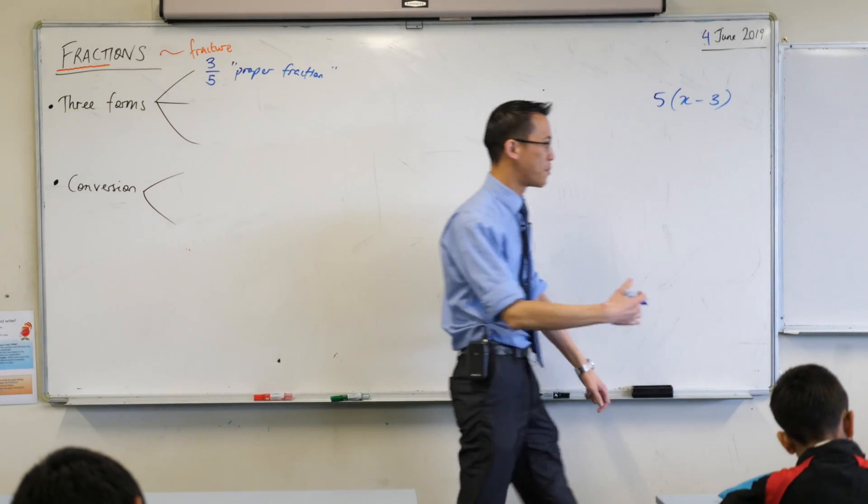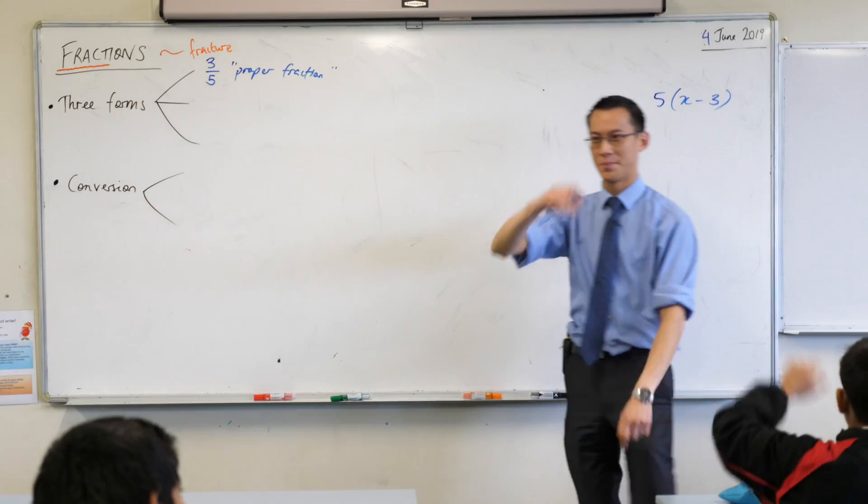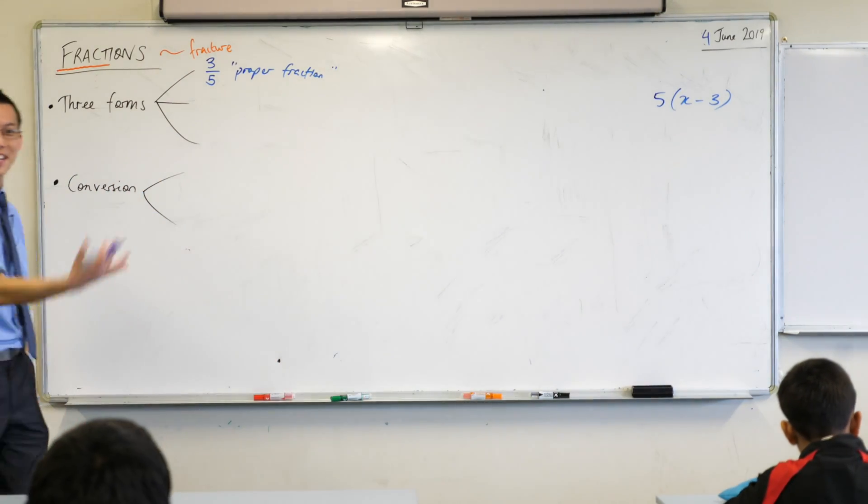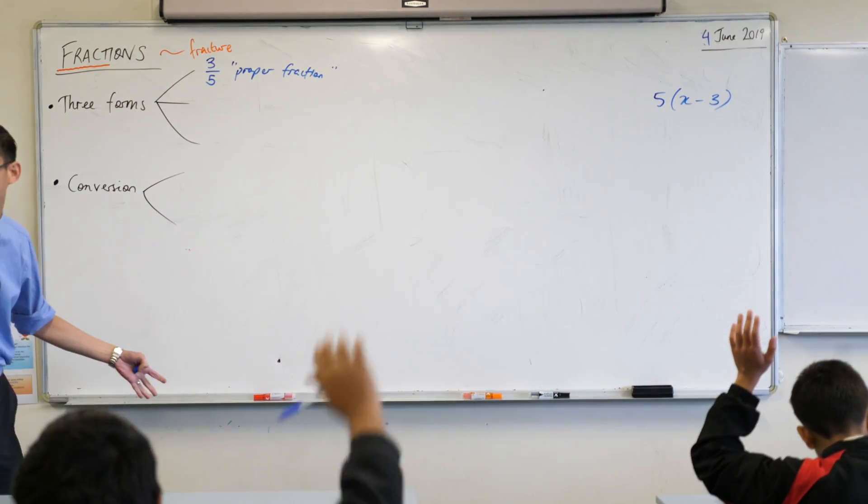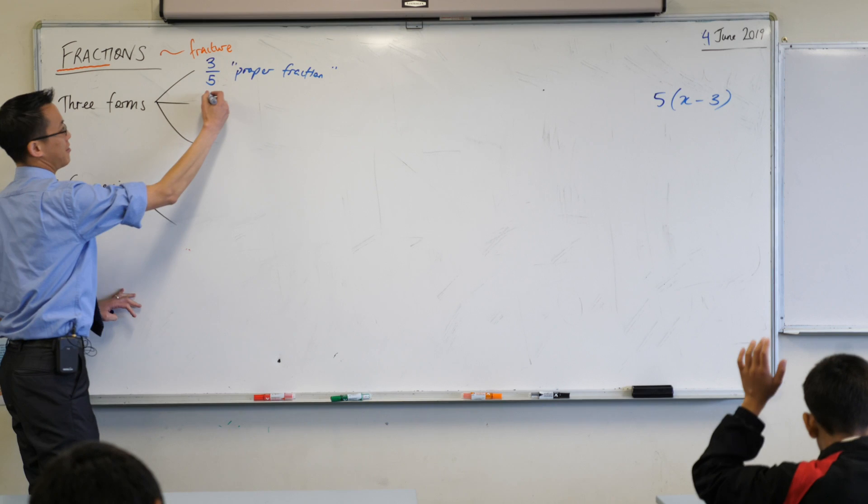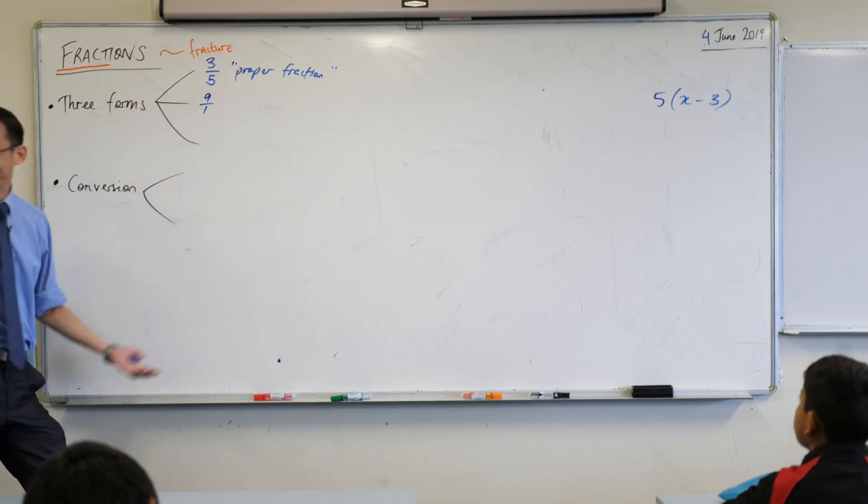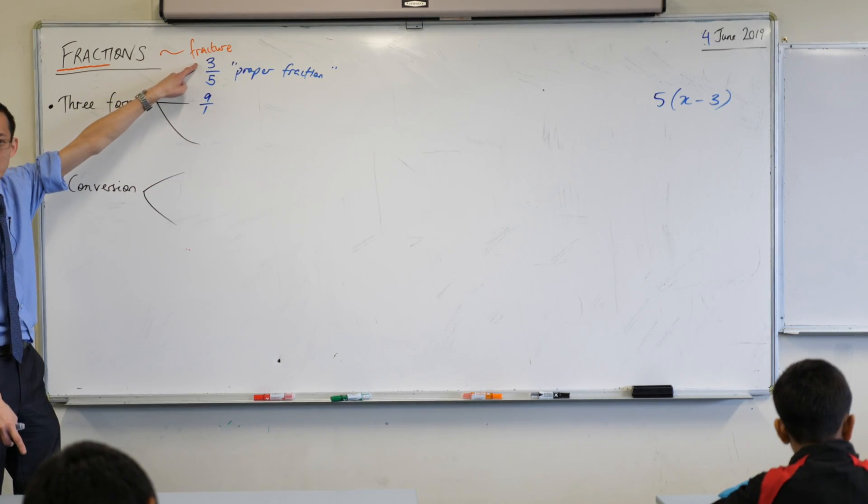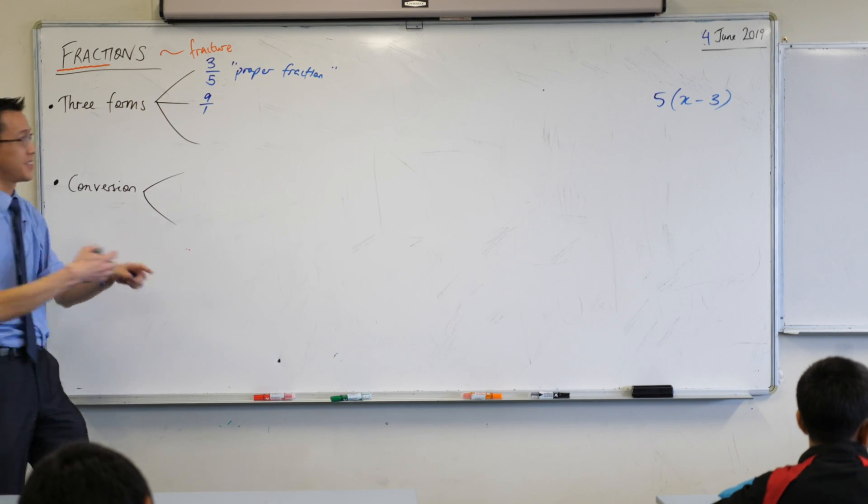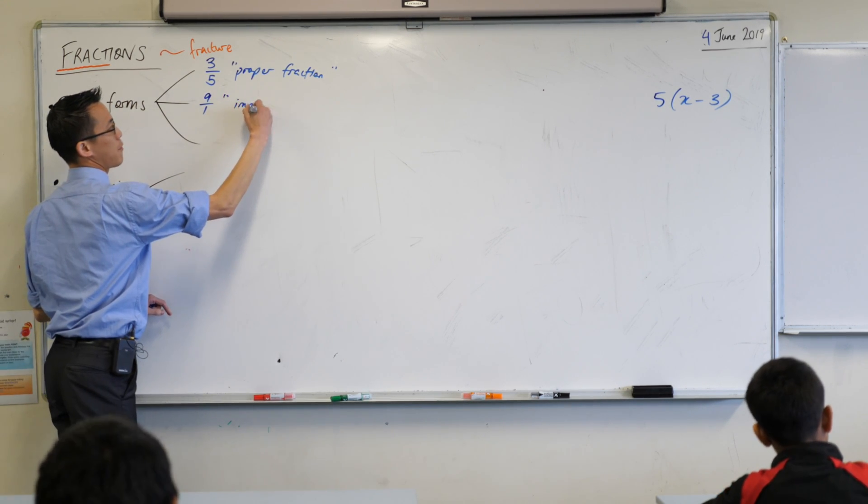Now, if you've got a proper fraction, what's the opposite of a proper fraction? Improper. Very good. Can someone give me an example of an improper fraction? Nine over one. Sure, why not. So this is improper, because rather than the numerator being smaller than the denominator, it's the other way around, isn't it? So we'll call this guy an improper fraction.